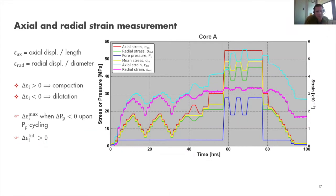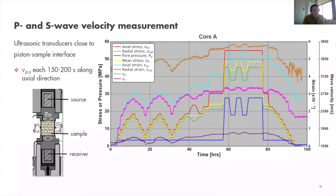We measure P- and S-waves every 150 to 200 seconds along the axial direction. In the cross-section of the triaxial loading apparatus, we measure P- and S-wave velocity in the axial direction. The P-wave appears as the brown line and the S-wave as the purple line. This is the data we obtain in these experiments.